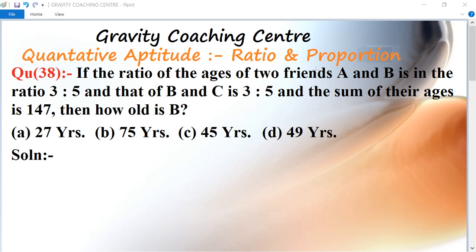If the ratio of the ages of two friends A and B is in the ratio 3 is to 5, and that of B and C is 3 is to 5, and the sum of their ages is 147, then how old is B?